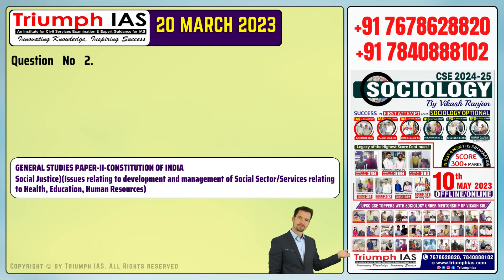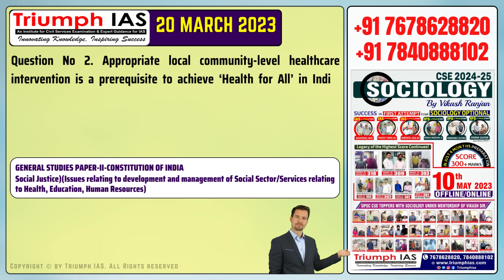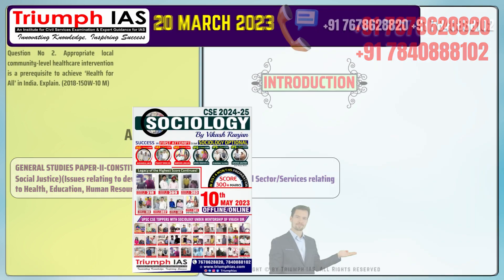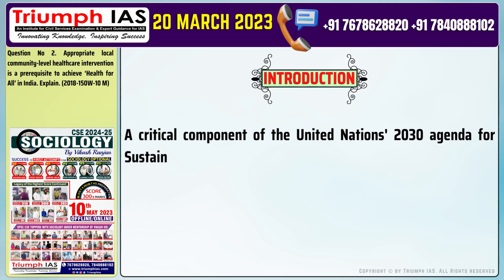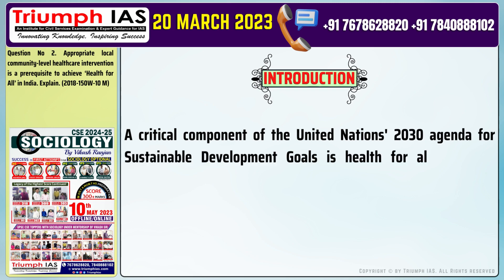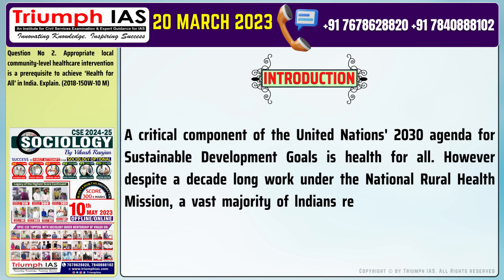Question number 2: Appropriate local community-level healthcare intervention is a prerequisite to achieve health for all in India. Explain. Let's start with the introduction of the answer. A critical component of the United Nations 2030 Agenda for Sustainable Development Goals is health for all. However, despite a decade-long work under the National Rural Health Mission, a vast majority of Indians remains outside the healthcare-for-all umbrella.